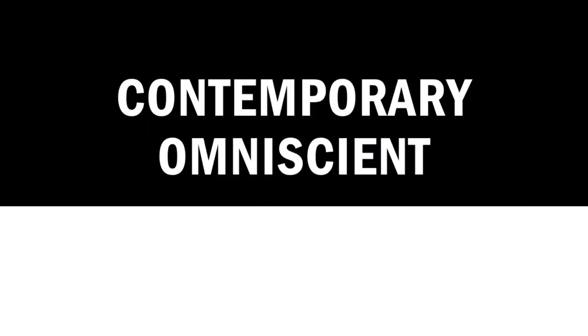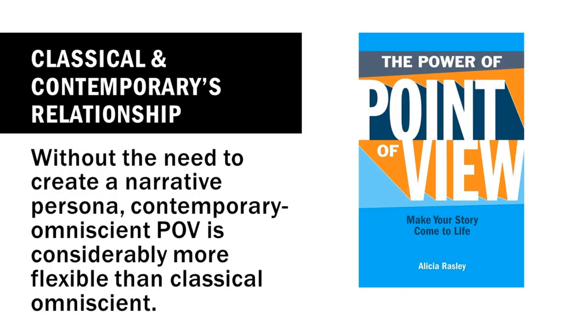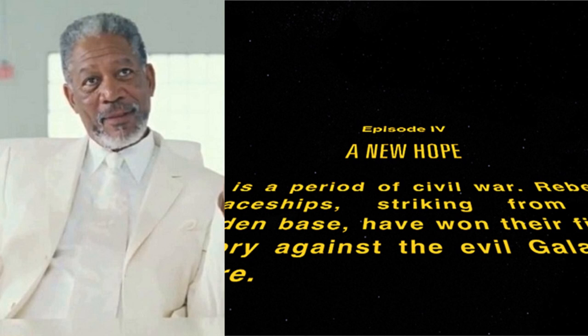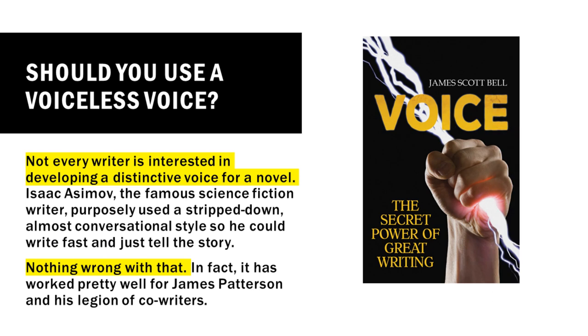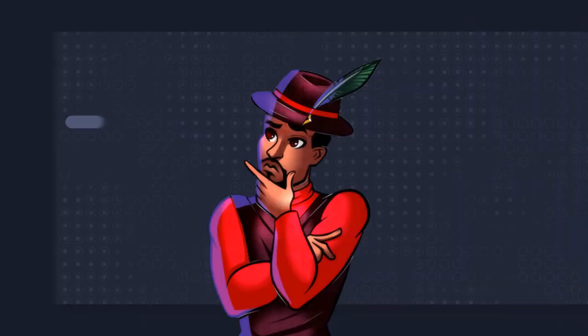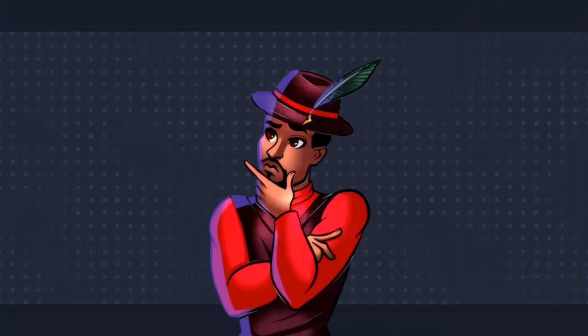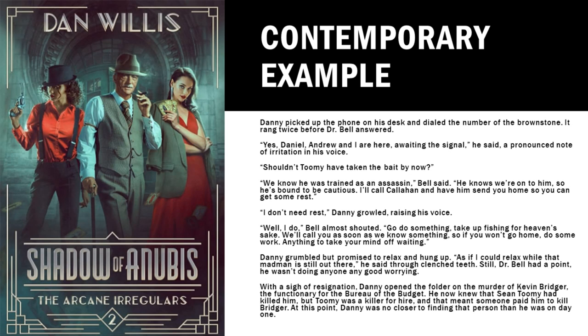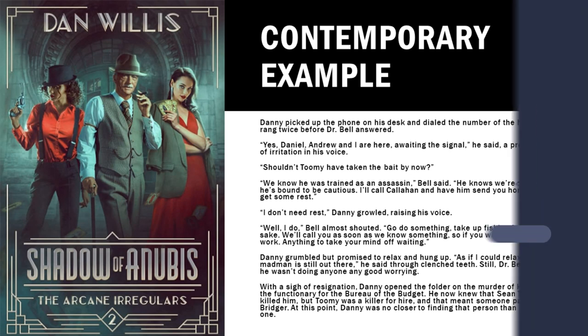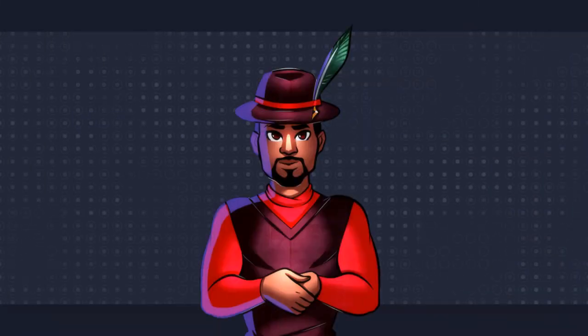Now that we got those two out of the way, we can finally chat about contemporary omniscient. It's got the same range on the narrative as classical, but it's kicked the persona to the curb. Think of classical omniscient as a Morgan Freeman voiceover, and contemporary omniscient as that Star Wars text scroll — it lays out all the information no single character could have, but without adding any character of its own. Contemporary is like the middle child between cinematic and classical, often coming into its own at the start and end of scenes or when switching from one scene to another. It can set the stage, zooming in to give a closer look at a character, then pull back when it's time to change scenes.